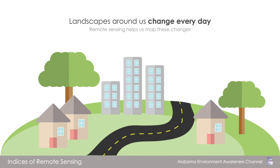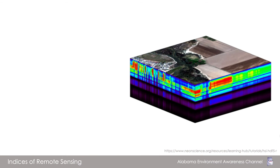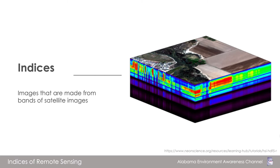To know the extent, rate, and pattern of change, we need an easy way to measure it. Remote sensing provides an easy way to map different landscapes of our environment using the bands of satellite images by employing some algorithms. The output of employing these methods to measure distinctive landscapes are often called indices.